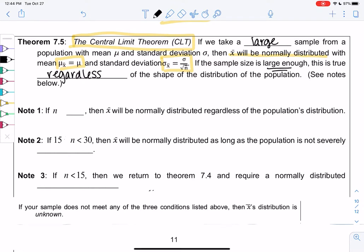It turns out that 30 is the cutoff. If n is greater than or equal to 30, then x̄ is normal. The population could be right skewed, could be anything, could be unknown. As long as we have a sample size of 30, we can use the normal curve.